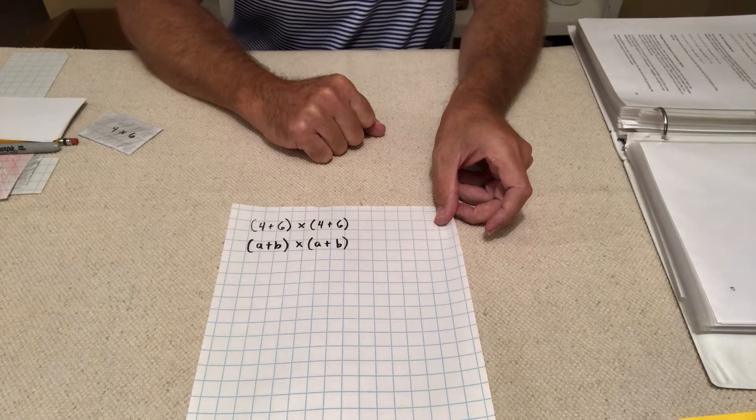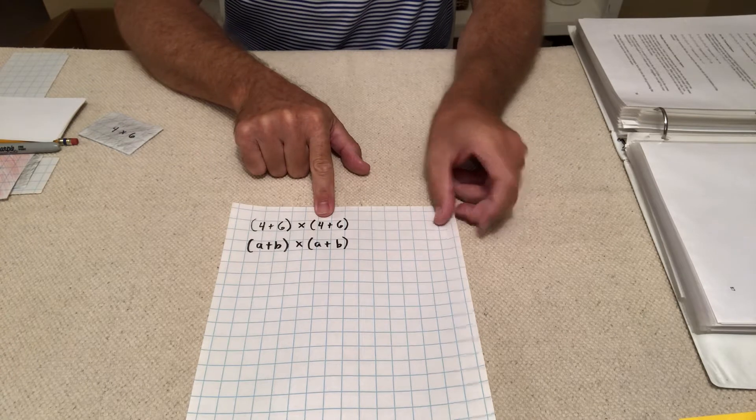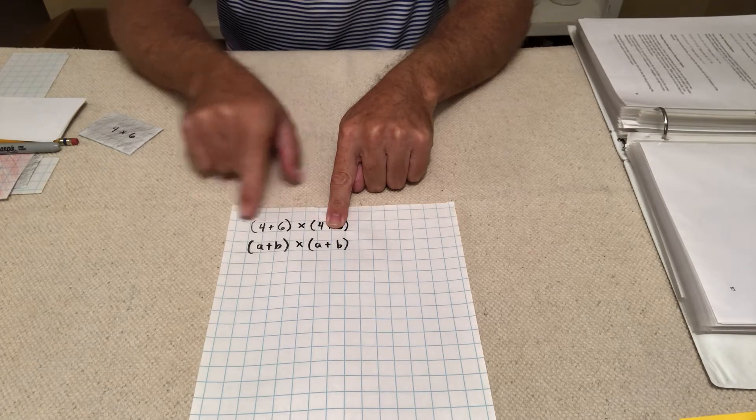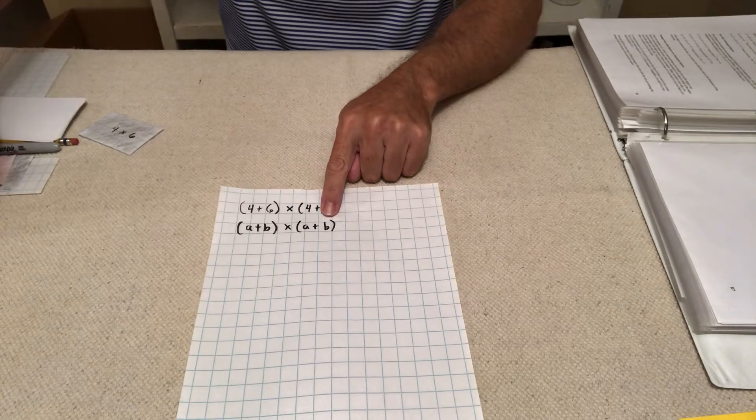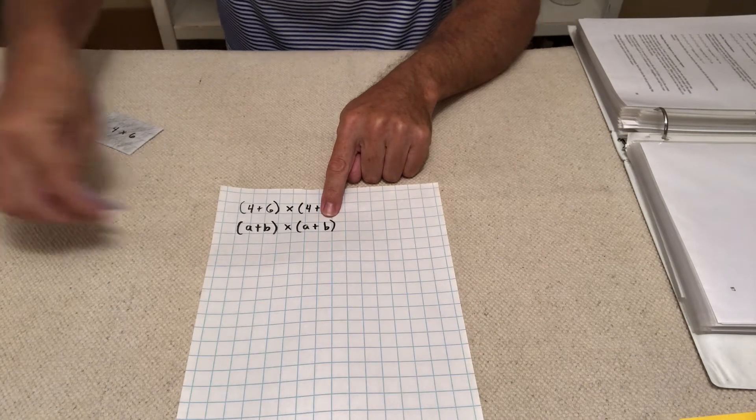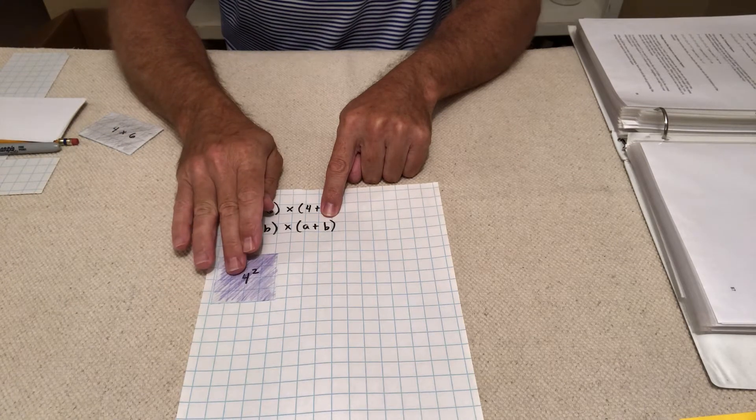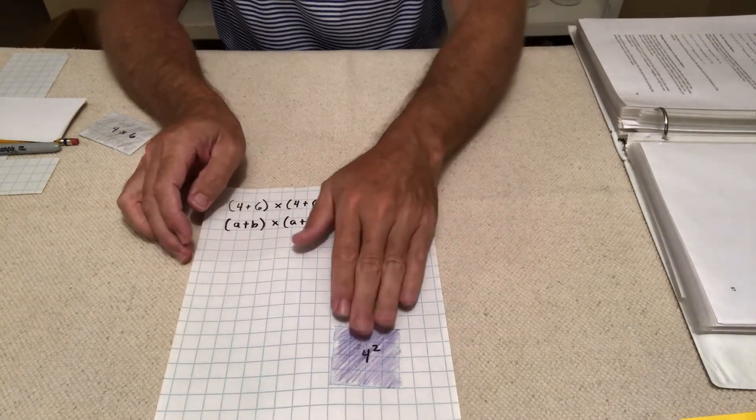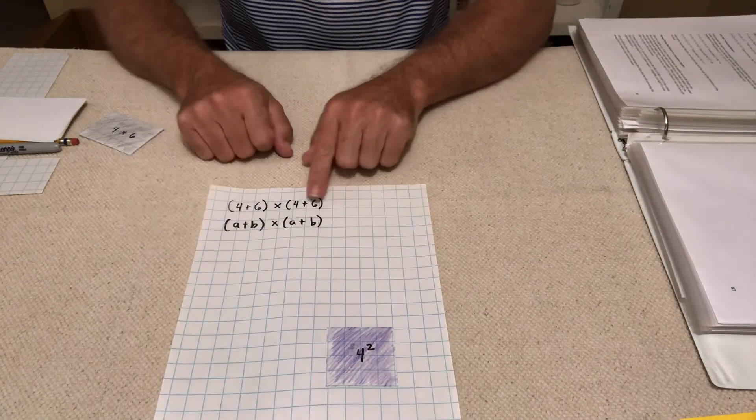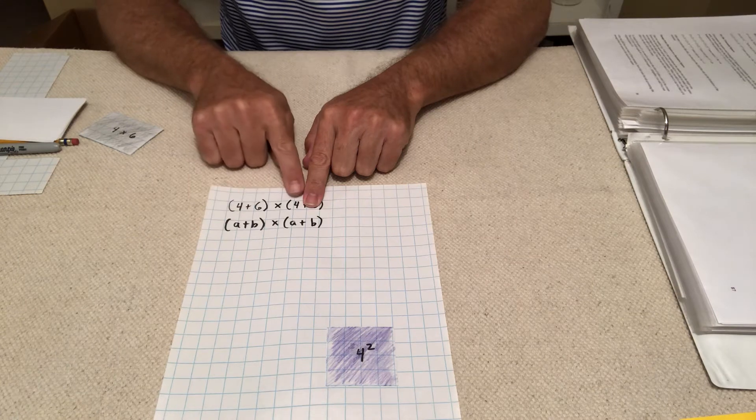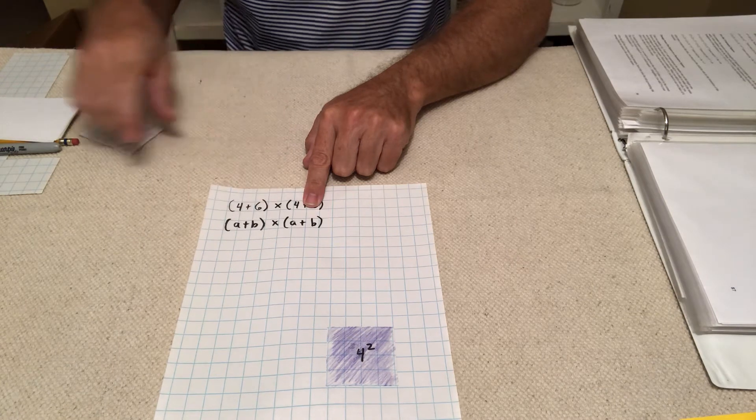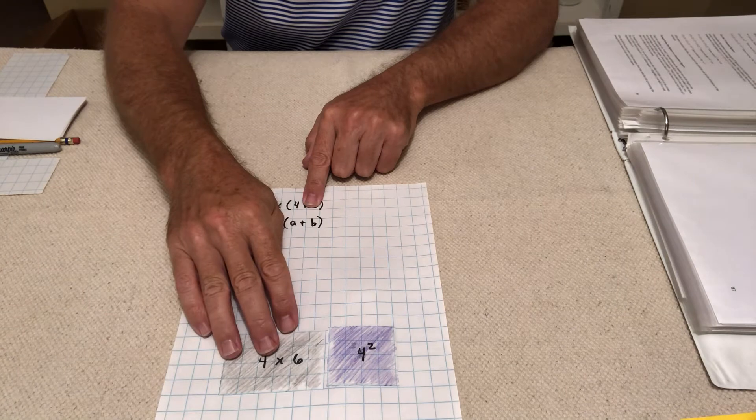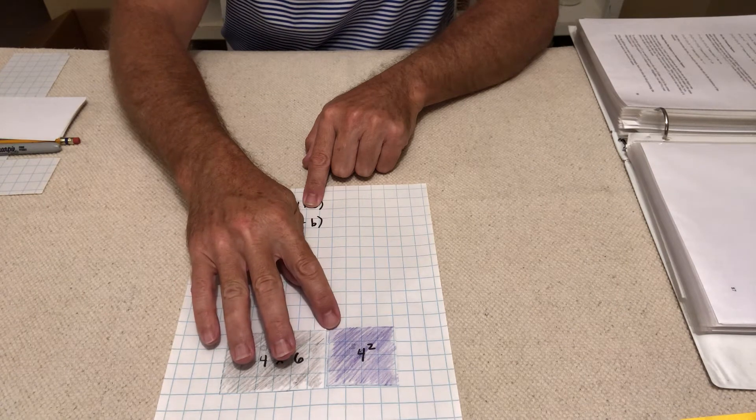So if I wanted to do the first part, which was multiply 4 plus 6 times 4, I would first do 4 times 4. So 4 times 4 would be the same as 4 squared. I'm actually going to put that right there. So there's my 4 squared. And then 4 times 6. So that would be that part of the problem.